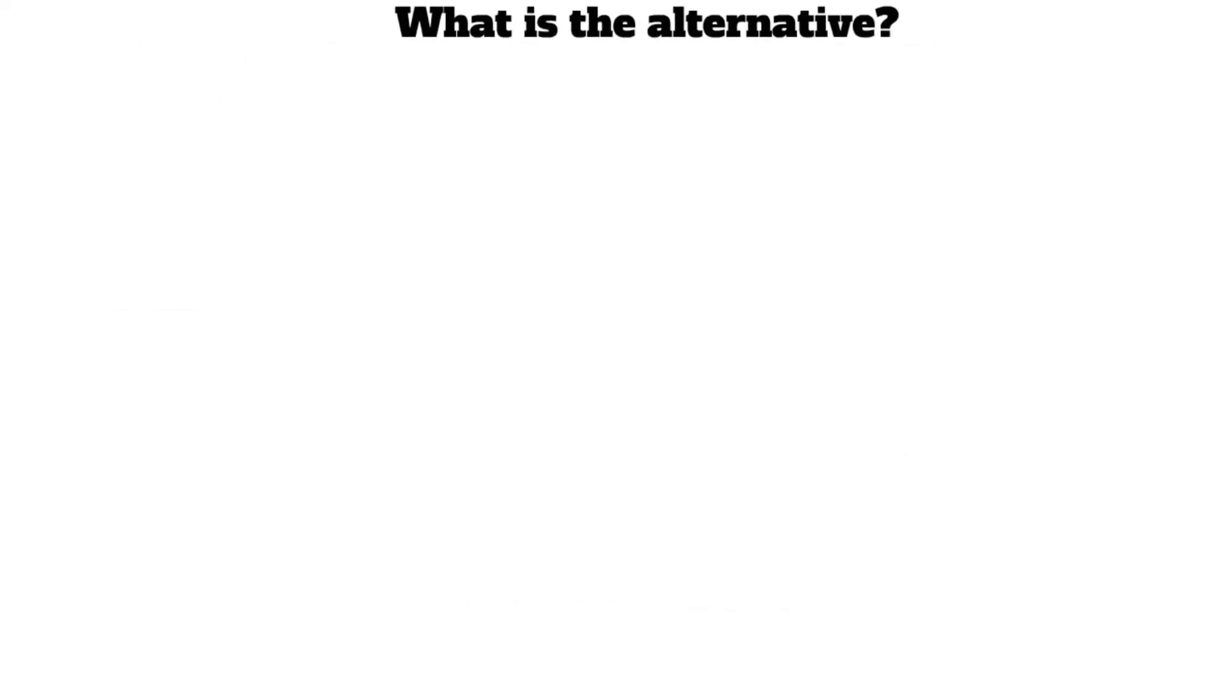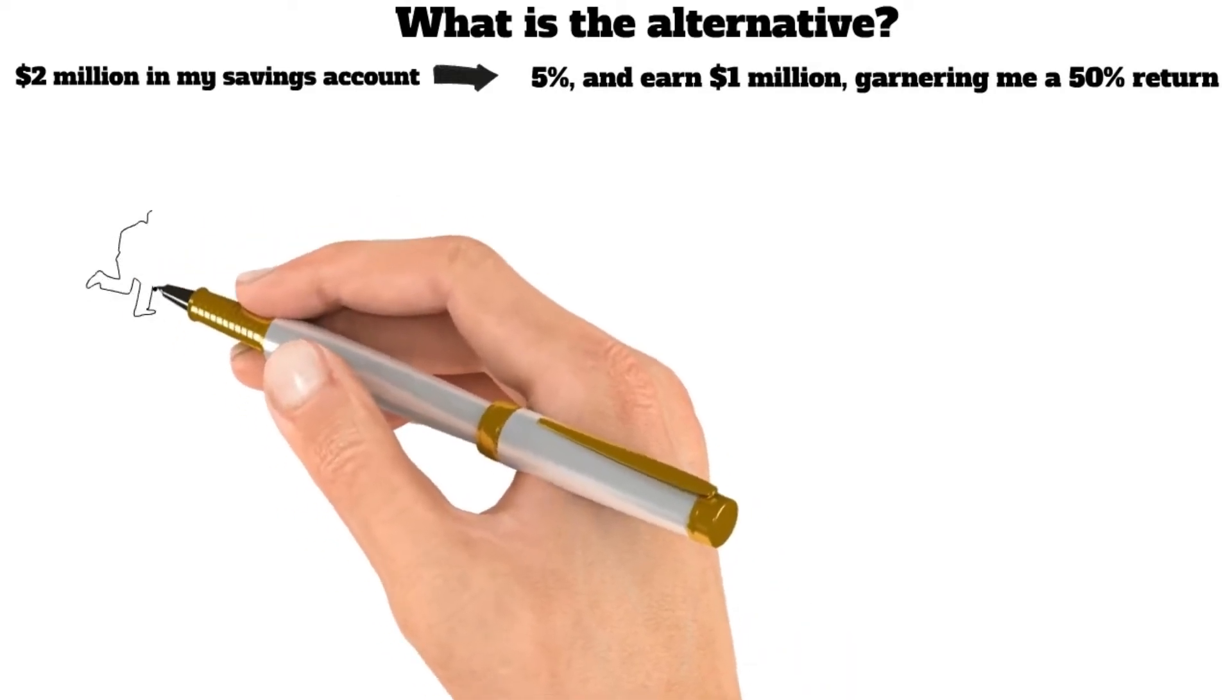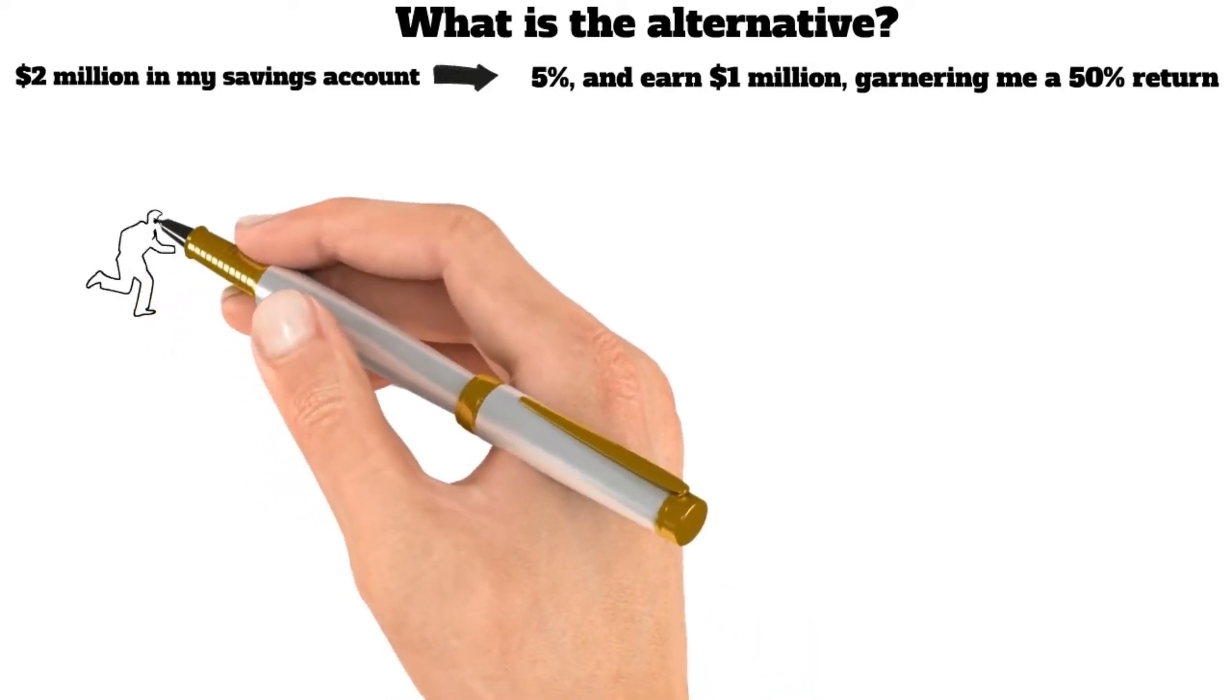If interest rates rise to 5%, I would only be willing to pay $400,000 for the business. After all, what is the alternative? I could easily put $2 million in my savings account, which currently yields 5%, and earn $1 million, garnering me a 50% return. It's oversimplified, but you get the point.